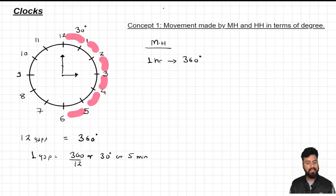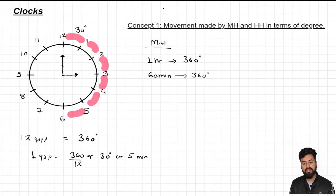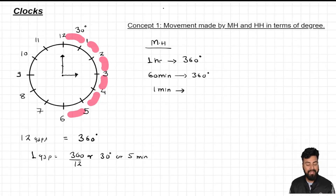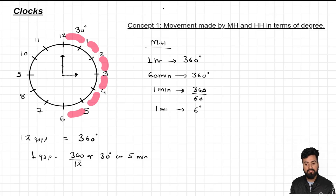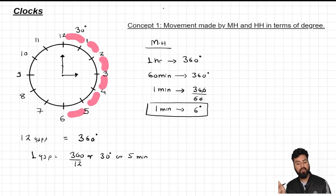One hour can be represented as 60 minutes, so in 60 minutes the total movement is 360 degrees. To calculate the movement made by the minute hand in one minute: 360 divided by 60 gives 6 degrees. So in one minute, the minute hand moves by 6 degrees.